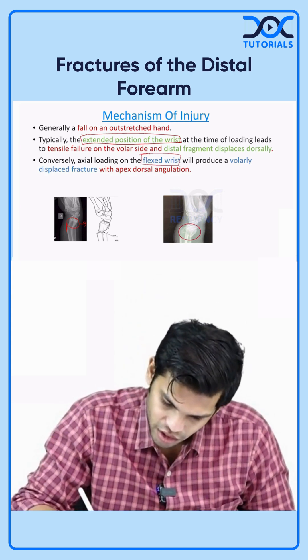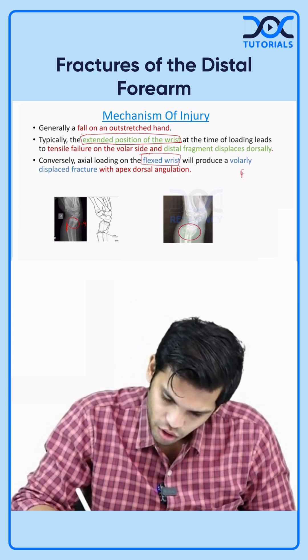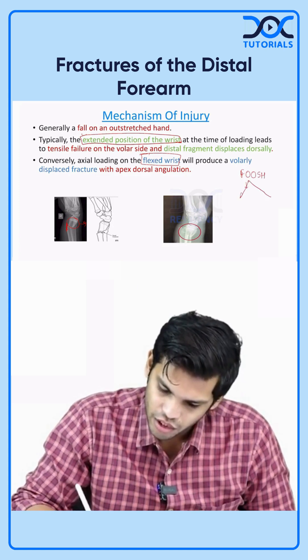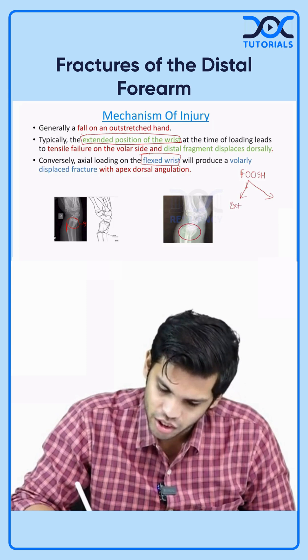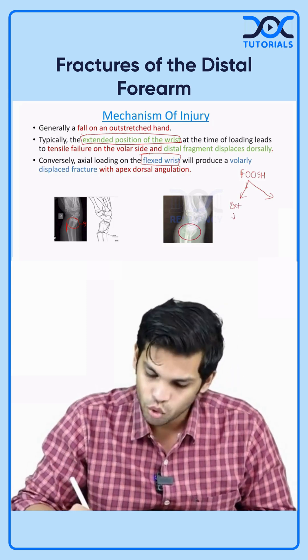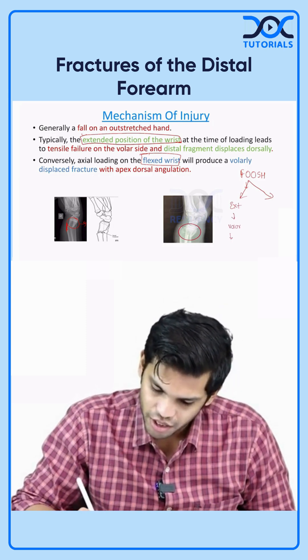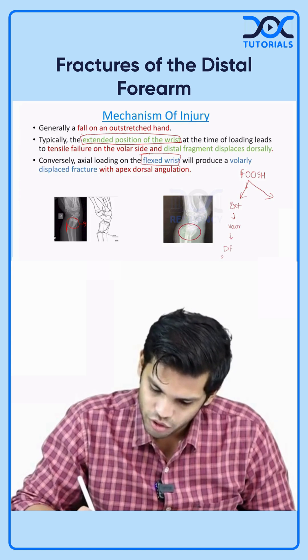Two scenarios. First is fall on an outstretched hand. With first scenario, wrist in extension will lead to tensile failure on the volar aspect and the distal fragment moves dorsally. Second scenario is wrist in flexion.